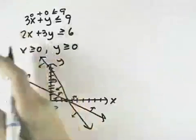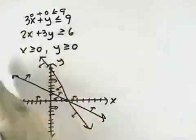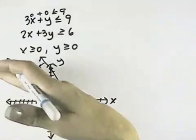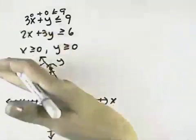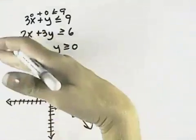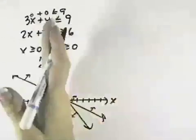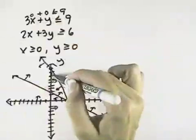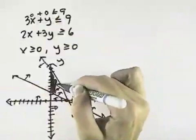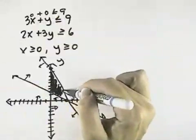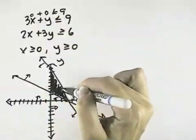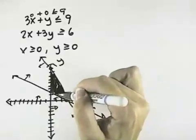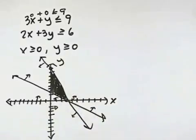This line shades to the left, so my solution has to be to the left of that line. This side shades up, so it has to be above that line. It has to be above the x-axis and to the right of the y-axis. That gives me the only place where all four of those overlap: this triangular region here is my solution.